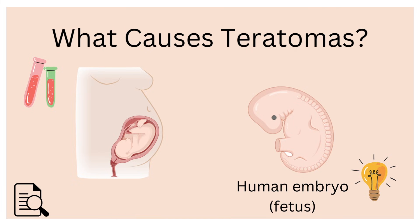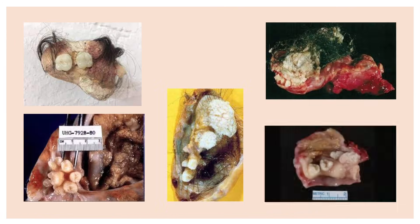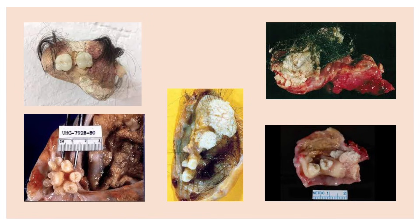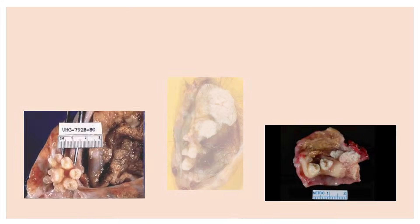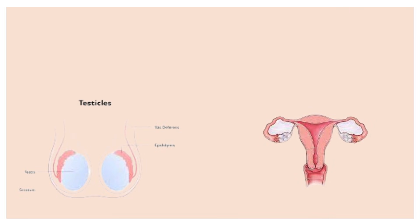Because teratomas are coming from germline cells rather than somatic ones, they are able to differentiate into many different types of tissues as tumor formation occurs. This is what makes it possible for hair, teeth, and even eyes to grow on them. Because they originate from germline cells, these tumors are most typically found in the testes and ovaries, but can be found in other areas such as the tailbone.